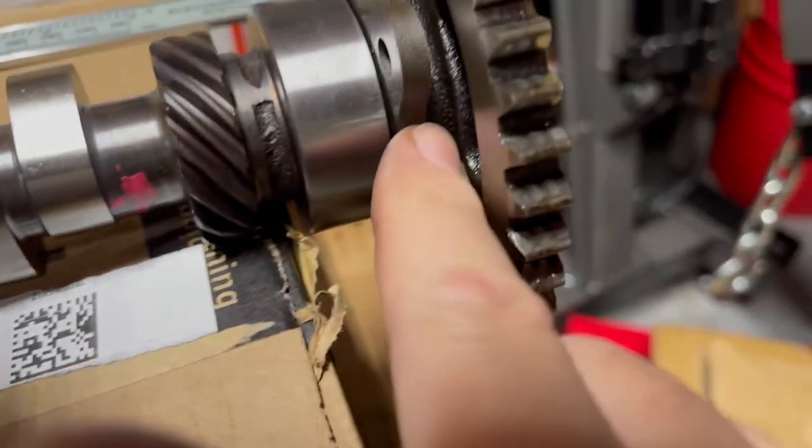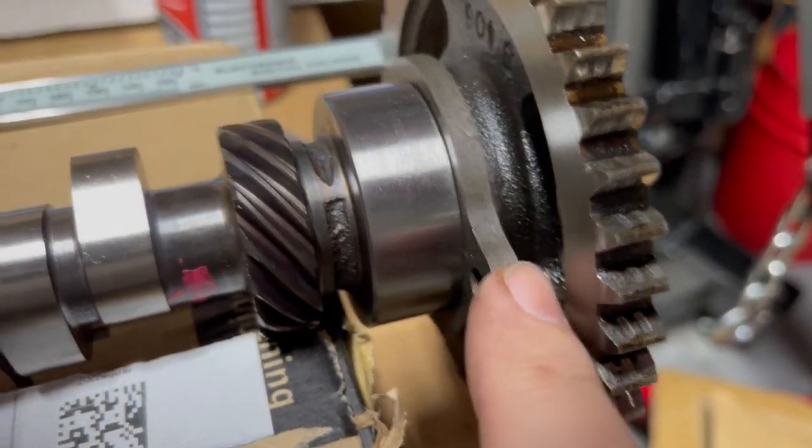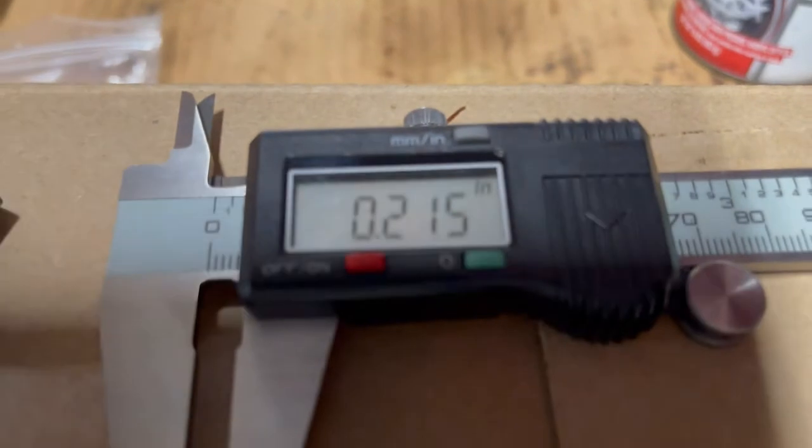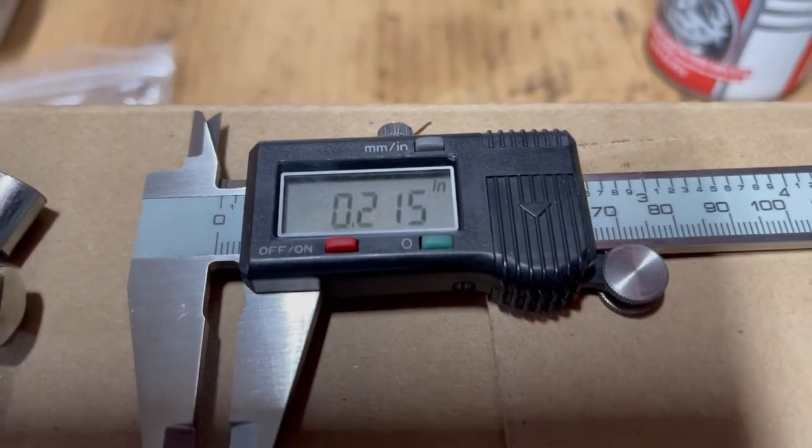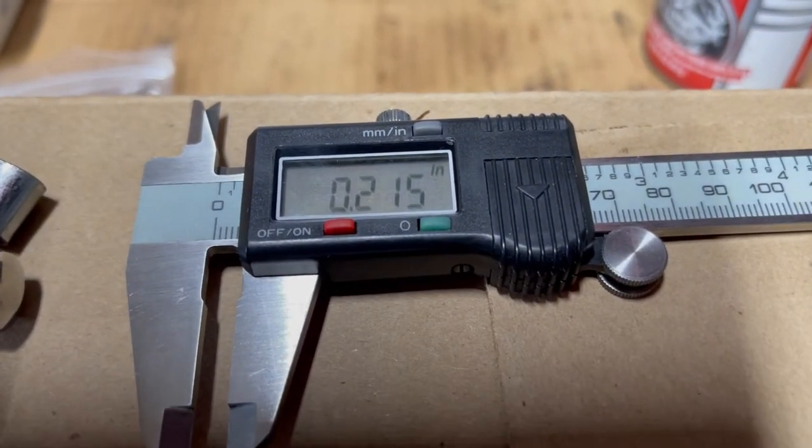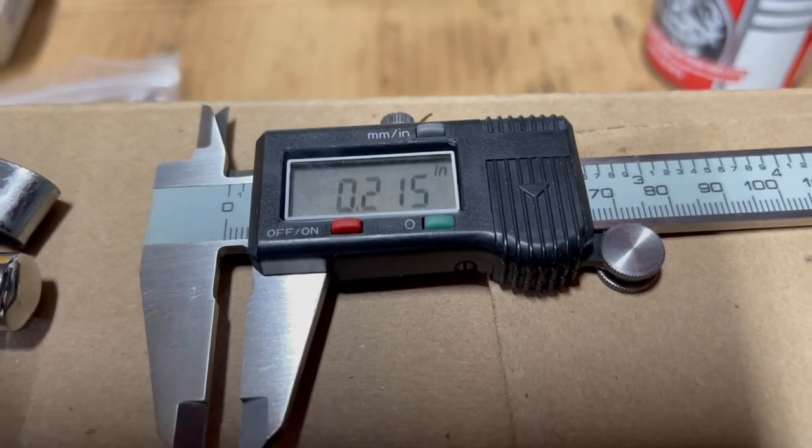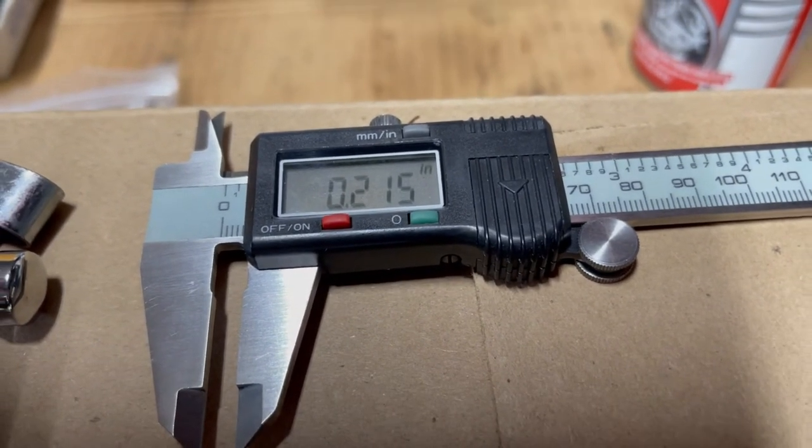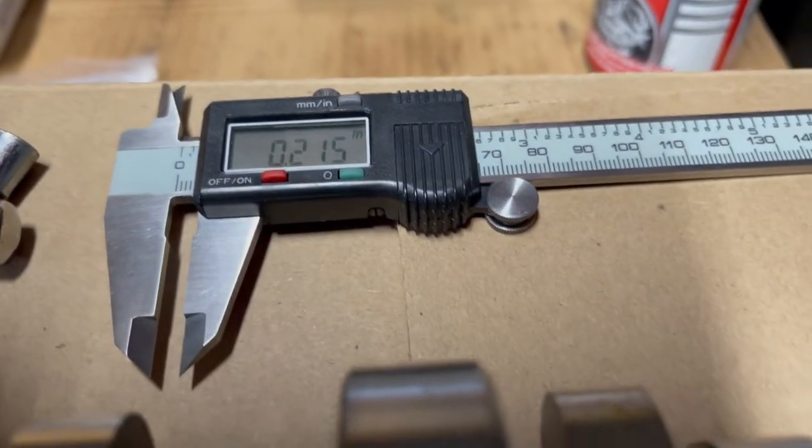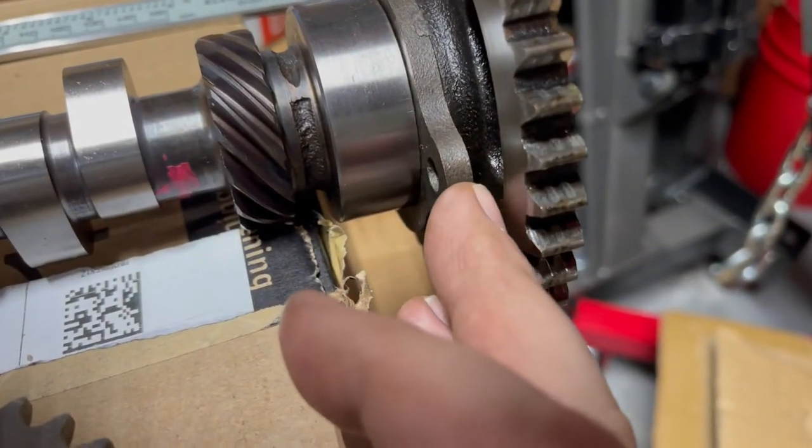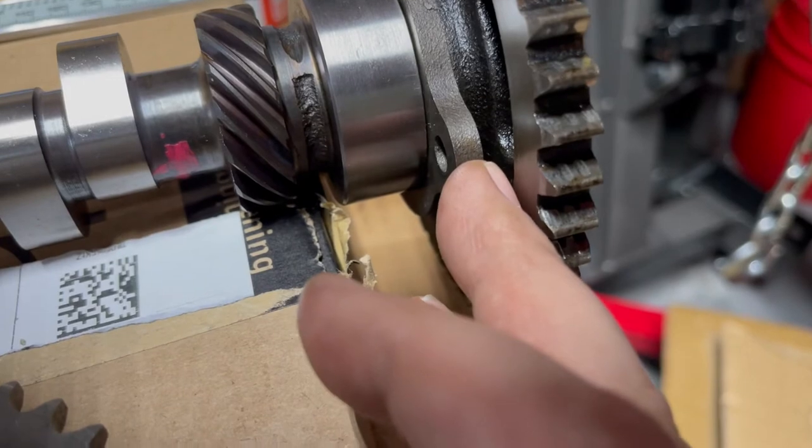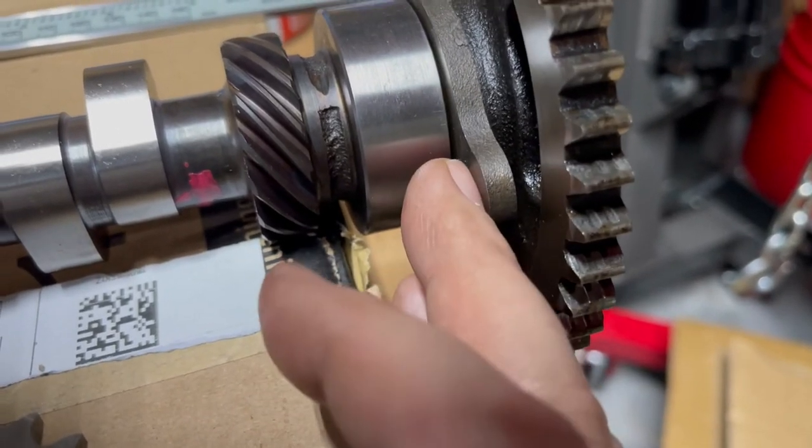Also, when I measured the thickness of the old thrust plate, it measured 0.215. It's supposed to be 0.250, a quarter inch. So you can see it's 35 thousandths off. If you take that 35 thousandths and add in the 5 thousandths clearance that I'm supposed to have, that gives me the 40 thousandths and that's what I measure now.